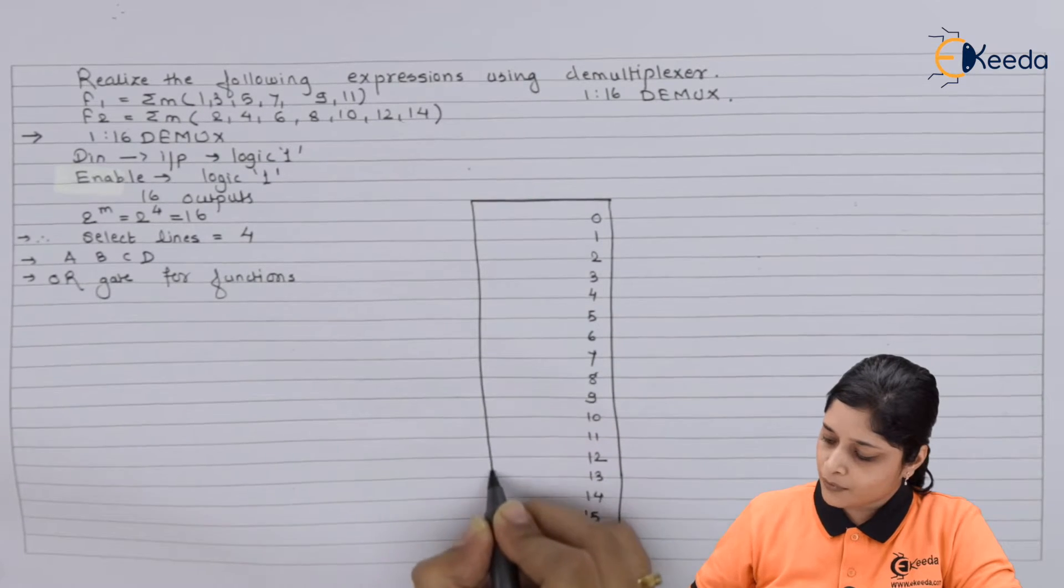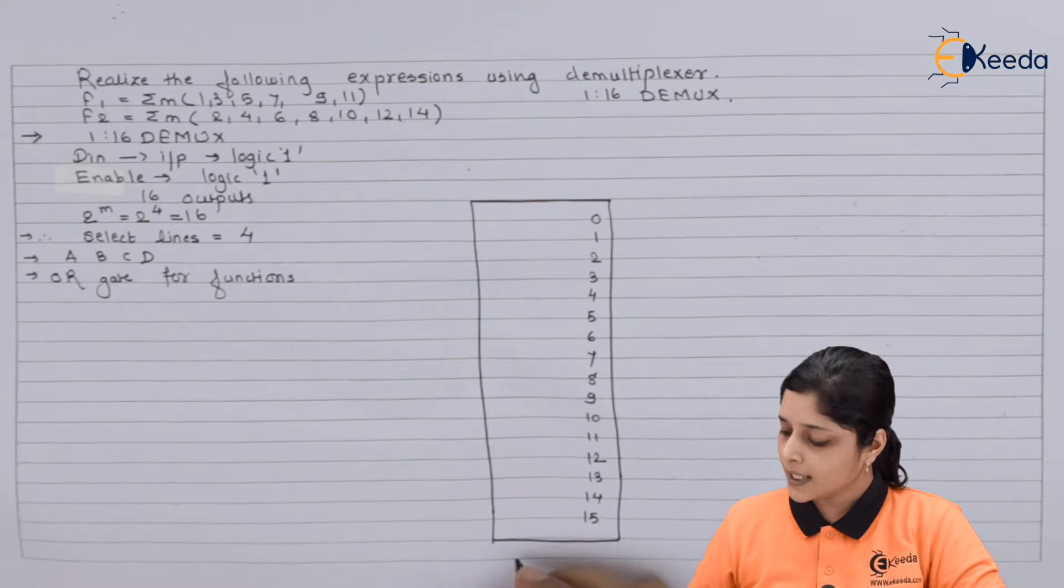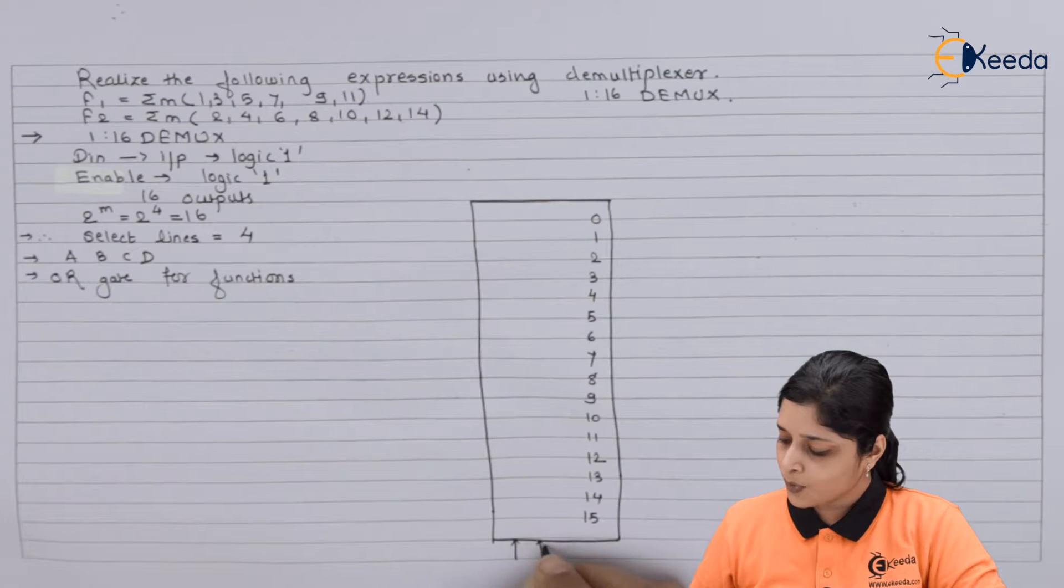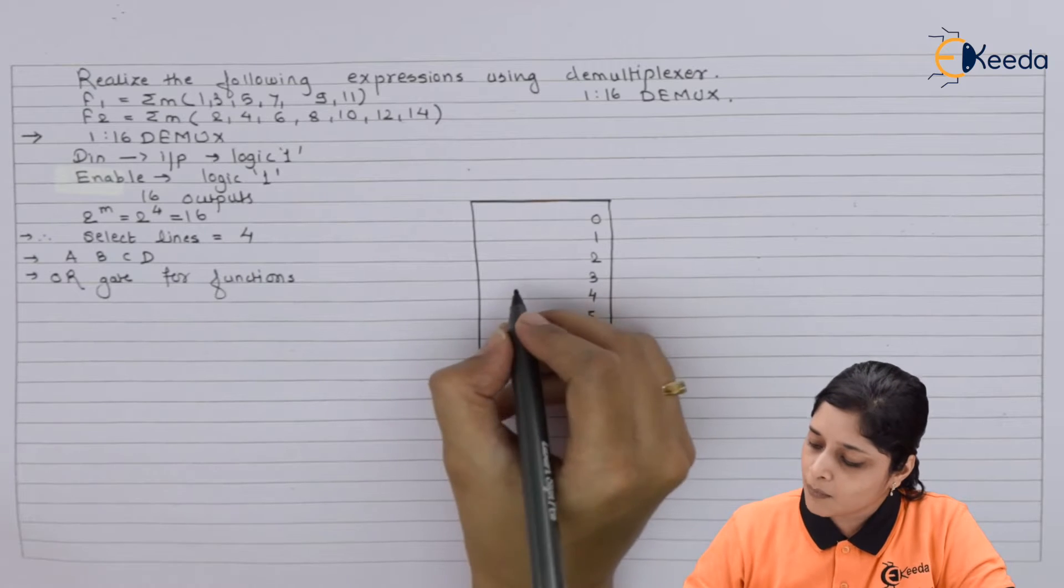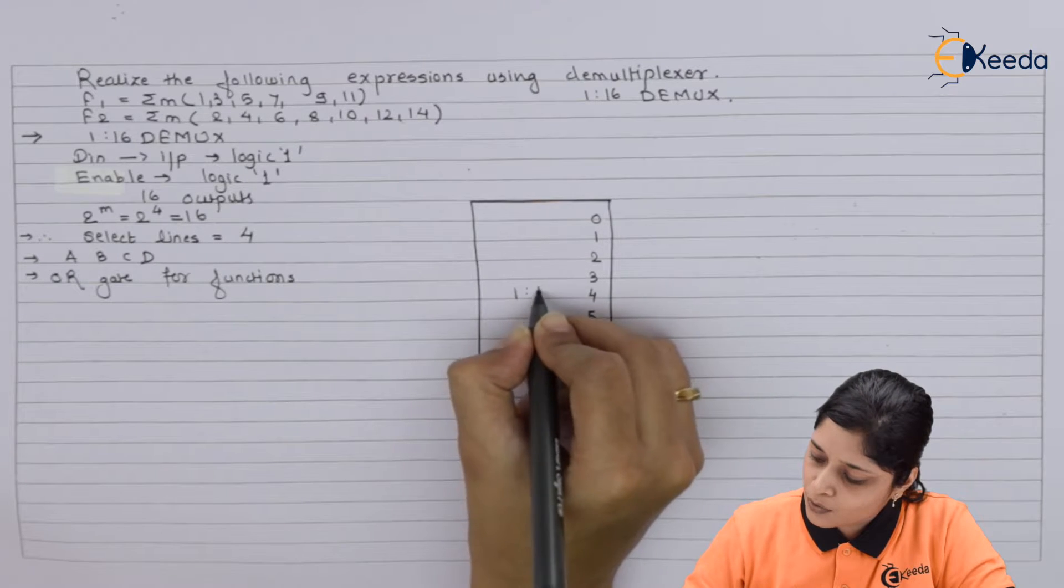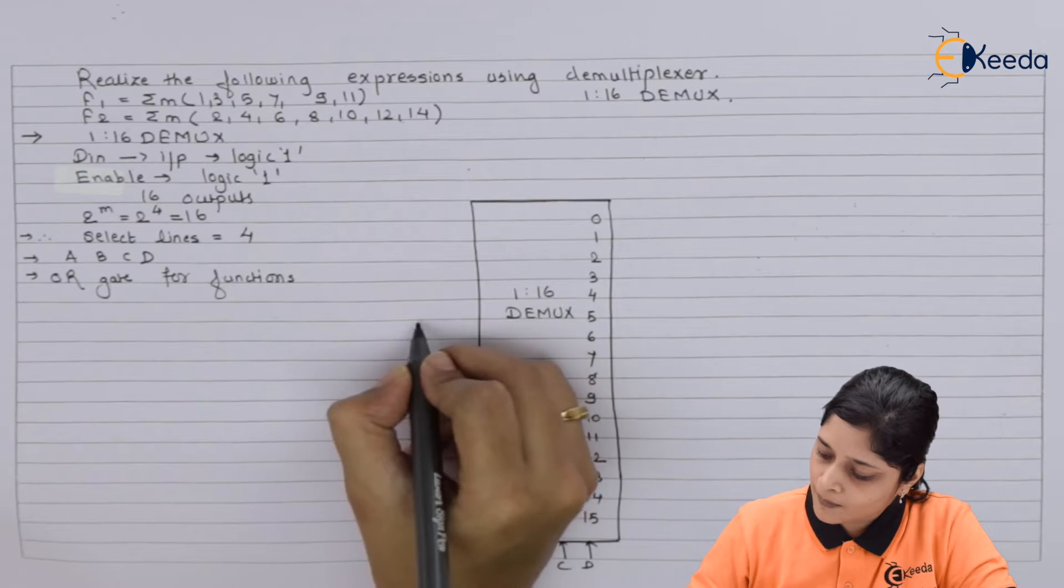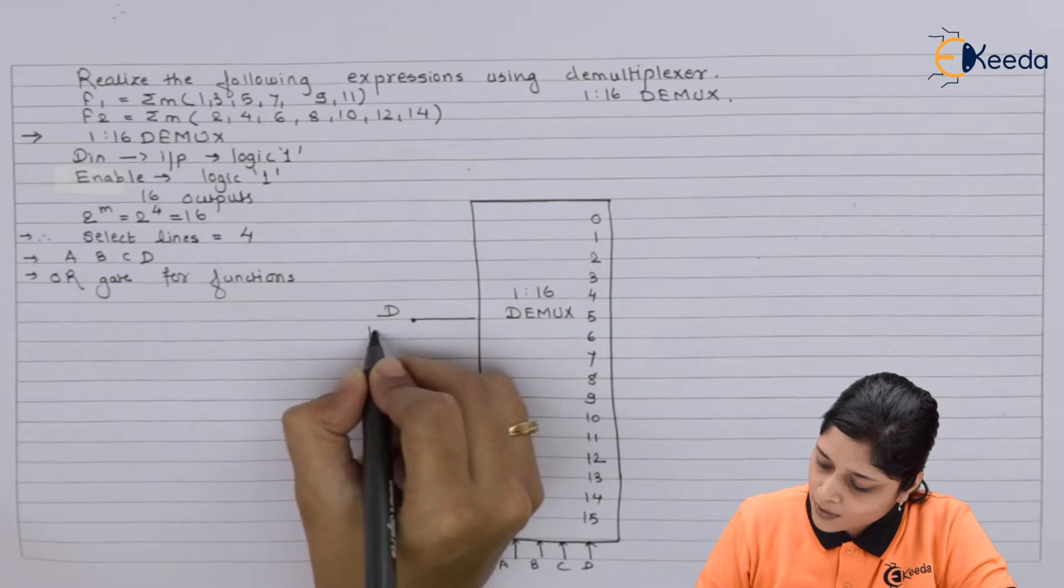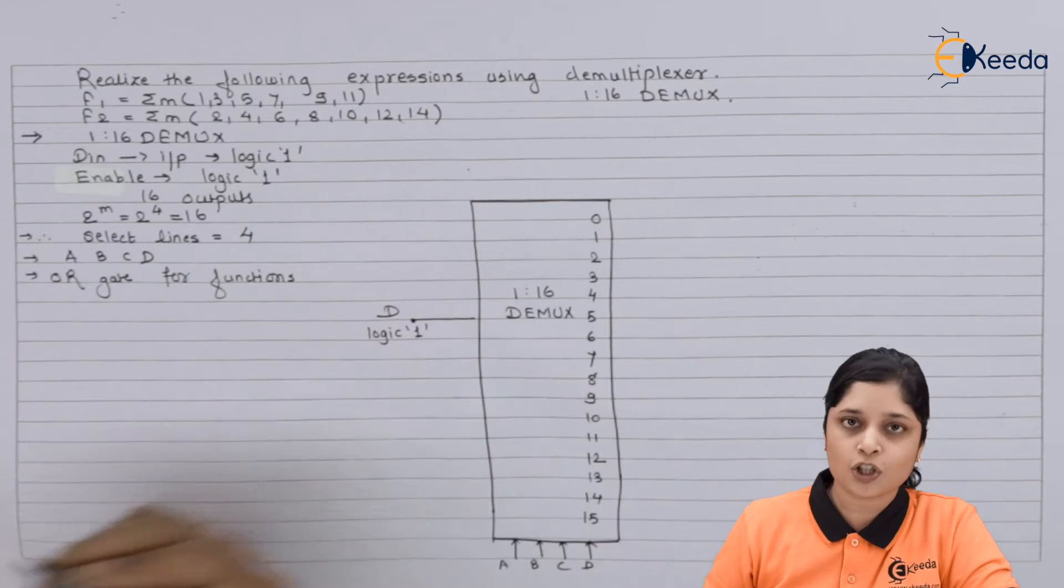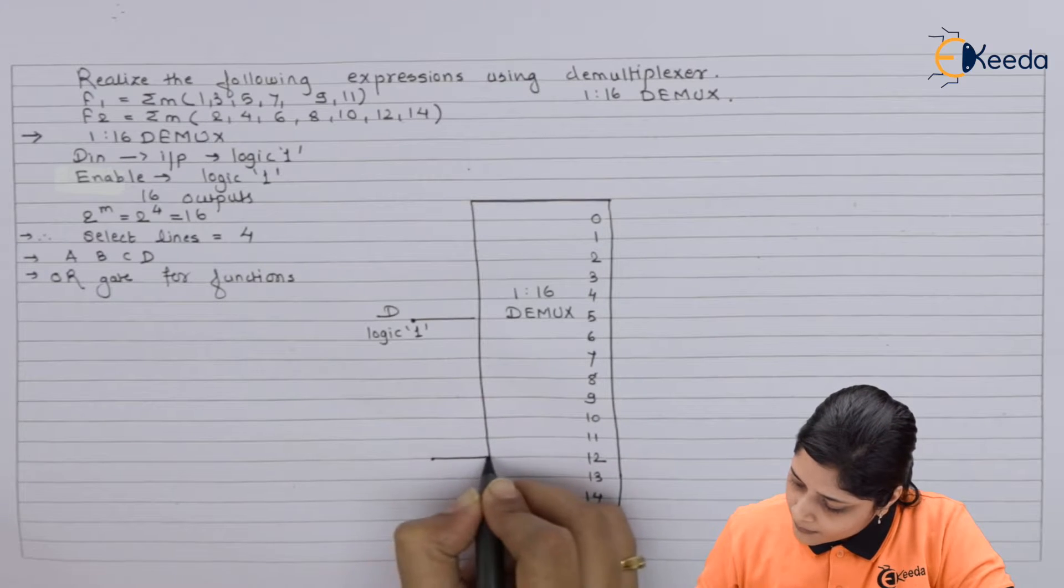In this way you have to draw one diagram. It has 4 select lines A, B, C, and D. The name of DEMUX is 1 to 16. It has always 1 input - we have to connect it to always logic 1. Then enable terminal is there, that is E, also connected to logic 1.